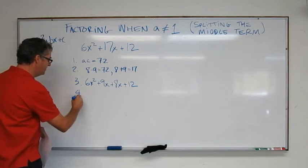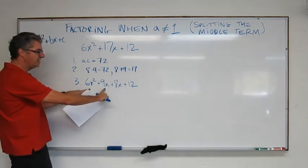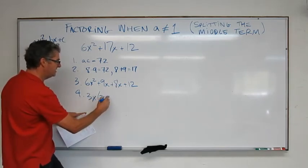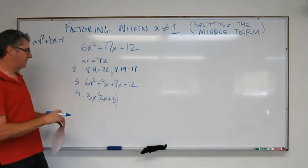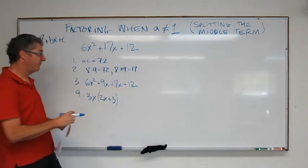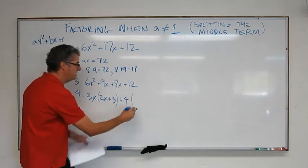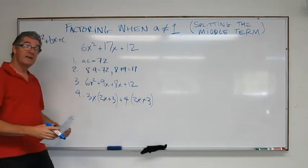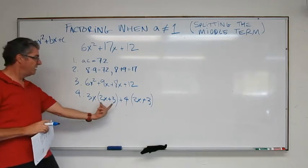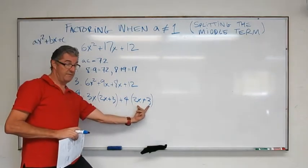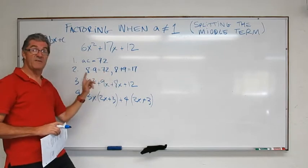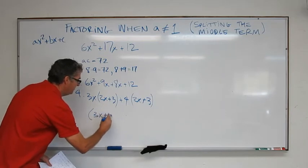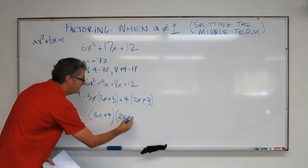So step 4 is to finish factoring. So what's my greatest common factor in these two? It's going to be 3x. That's going to leave 2x plus 3. And then my greatest common factor in these two is just 4. So that's plus 4 times, what's that going to be? 2x plus 3. And again, we have confirmation that we're doing it right because this is the same as this. If they're not, you've got to drill back in and figure out where your mistake is.